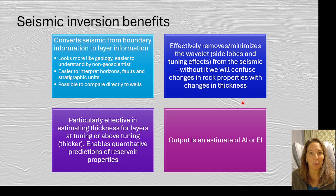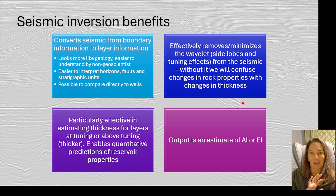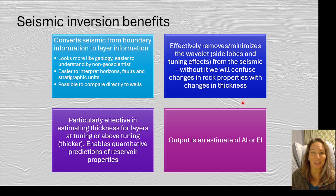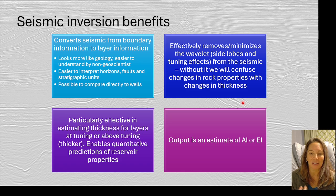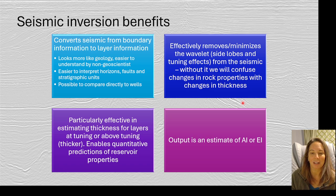You might be wondering why we go through all this trouble to do the seismic inversion. There are a lot of benefits. First, it converts our seismic from boundary information to layer information, which makes our data look more like actual geology — really helpful when working with non-geoscientists who aren't used to thinking in terms of interfaces. Second, it effectively removes those wavelet effects: the side lobes and tuning effects that trick us into seeing things that aren't really there. It also helps us estimate the thickness of layers near or around the tuning thickness, making us more quantitative in reservoir prediction.